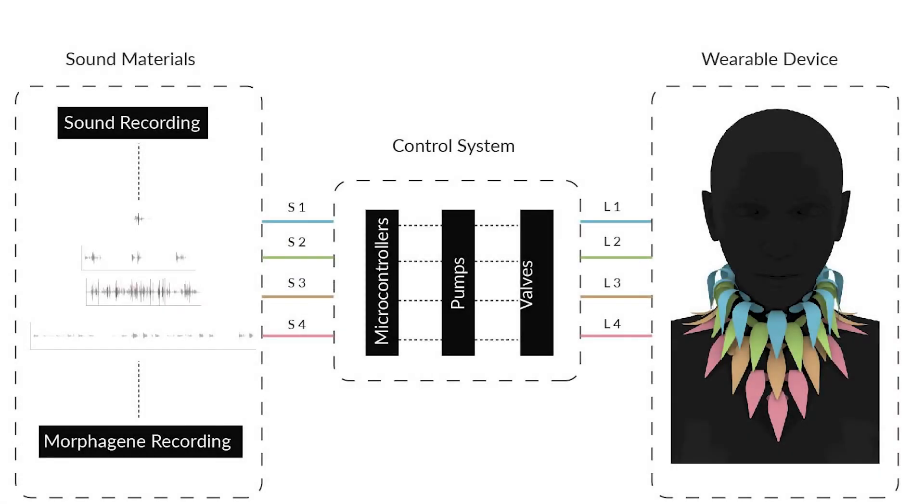The realization of softballs has three main components: sound, control system, and wearable device. Sound material in this system is the input data to control the wearable device. The four sound materials activate the four layers of feathers, which indicate blue, green, orange, and red layer.